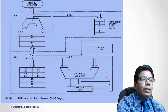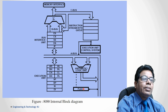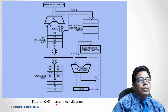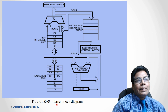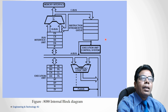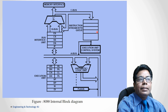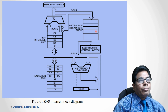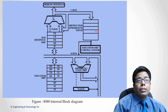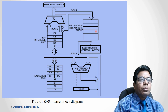Similarly, the block diagram of 8088 again has a bus interface unit and execution unit which are separate. The only difference is the instruction byte queue: in 8088 it is 4 bytes instead of 6. Also, the data bus in 8088 is 8-bit. That is the only difference between 8086 and 8088.